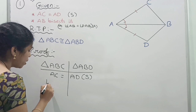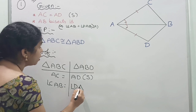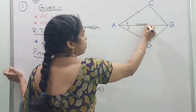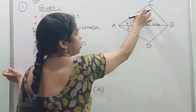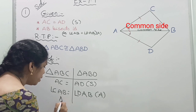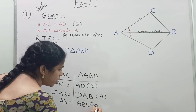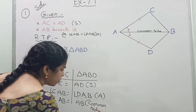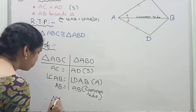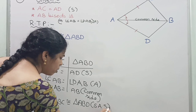The equal parts are: first, AC is equal to AD (side); next, angle CAB is equal to angle DAB (angle); and AB is the common side for both triangles ABC and ABD, so AB is equal to AB — reason: common side. We get SAS congruency. Therefore, triangle ABC is congruent to triangle ABD by SAS congruency rule.